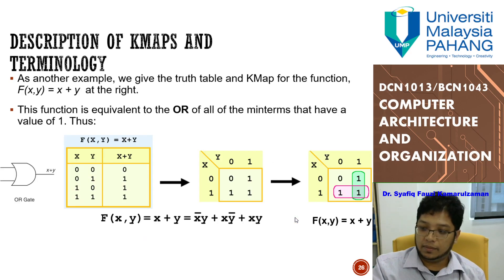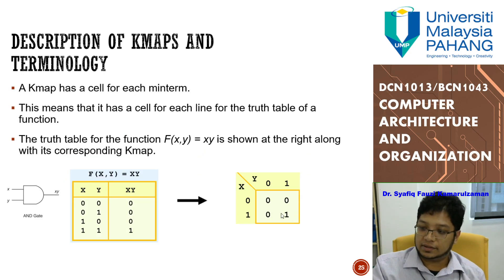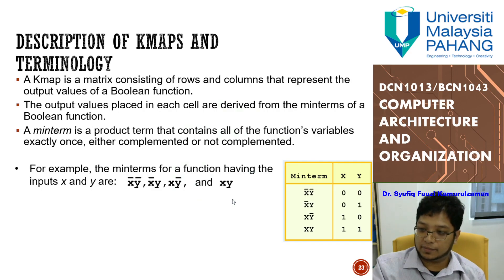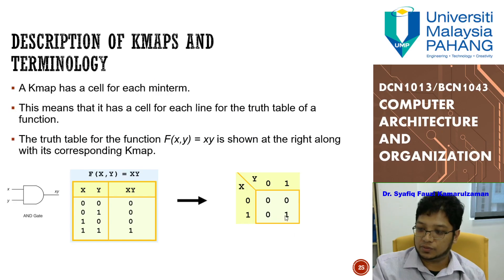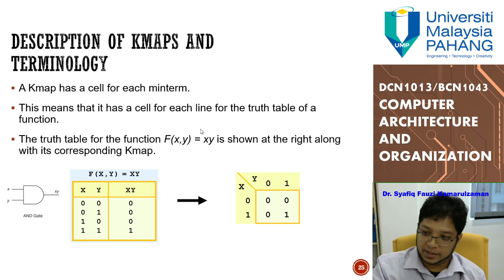Looking at this K-map, the only cell with a 1 is when x=1 and y=1. So the Boolean expression is simply x times y. We only take the minterm where the result is 1, giving us f(x,y) = xy. This is the final Boolean expression for the AND gate.